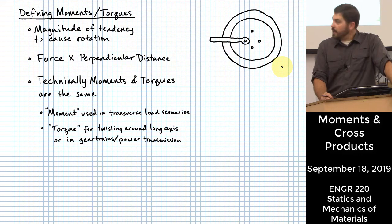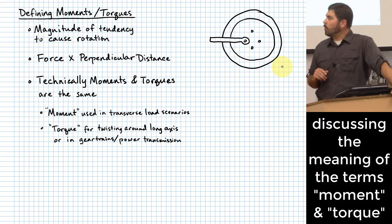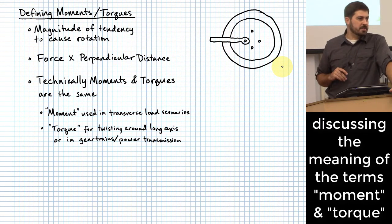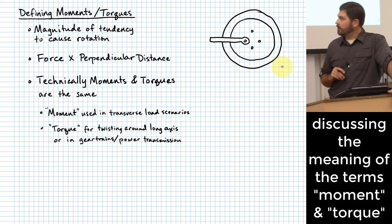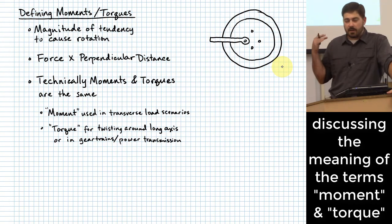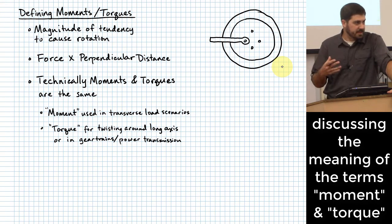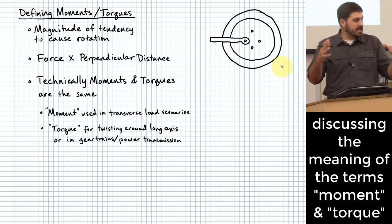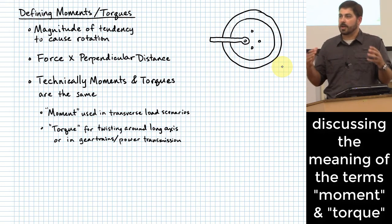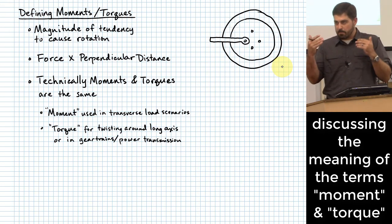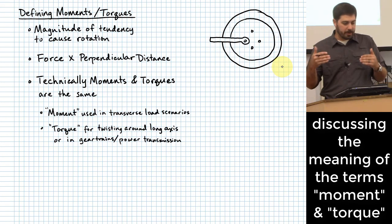Today we have a combination of some review stuff that hopefully you remember a little bit about from Engineering 122, but for some of the things we cover today it will look a little bit new. Let's start by trying to remember what we mean by moments and torques. The idea of moments and torques is that it is a measure of the magnitude of a tendency to cause rotation.